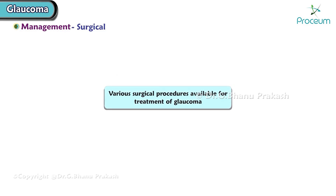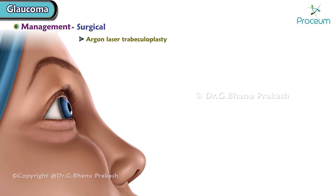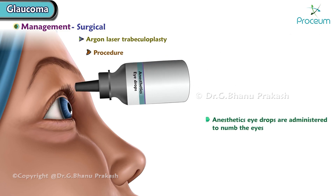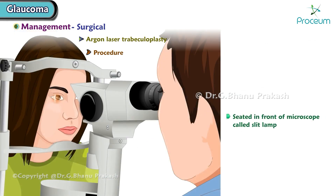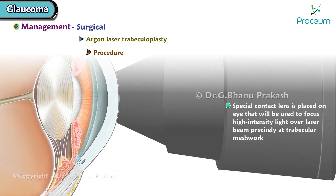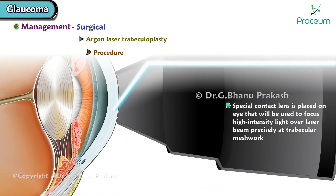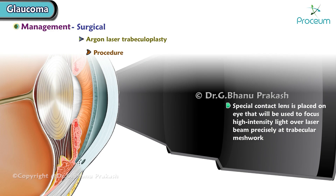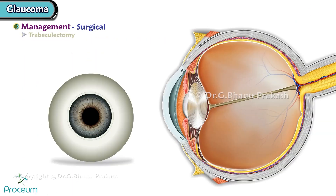Surgical management: argon laser trabeculoplasty — first, anesthetic eye drops are administered to numb the eye. The patient is seated in front of the slit lamp microscope, and a special contact lens is placed on the eye to focus a high-intensity laser beam precisely at the trabecular meshwork. This helps clear the blockade and reduces eye pressure.